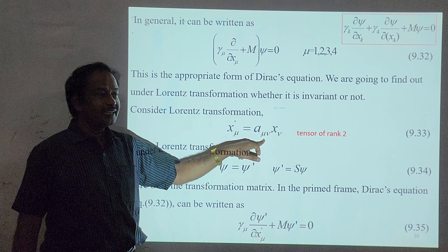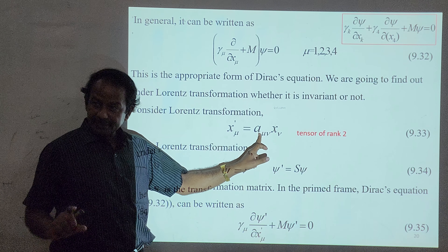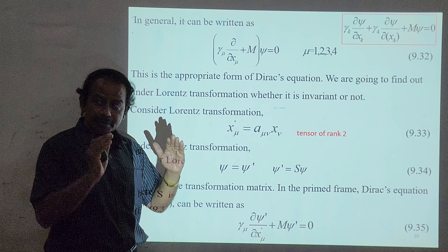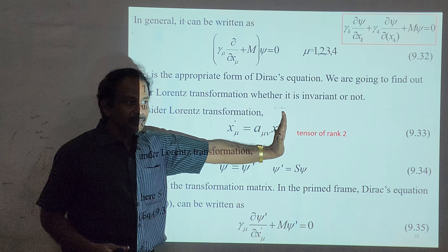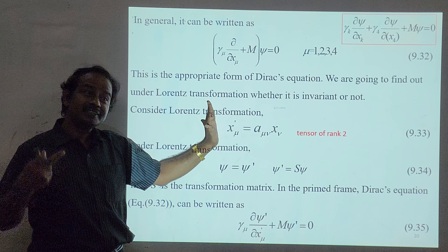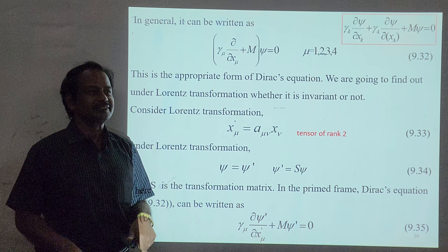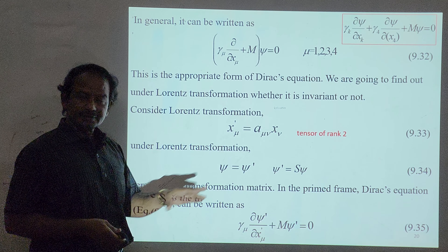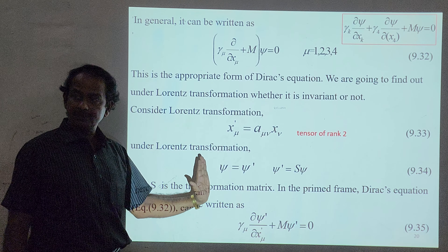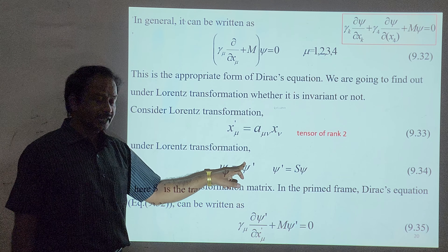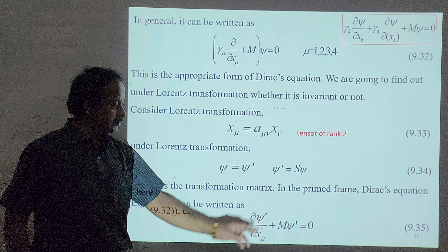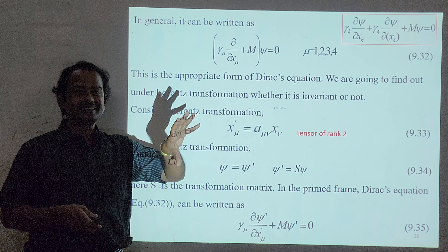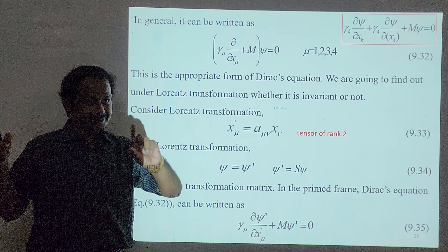Consider Lorentz transformation given by the matrix A_μν — this is a tensor of rank 2 with two indices μ and ν. As I said, a matrix multiplied by a column vector gives a new column vector — representing the coordinate transformation. Now, psi in one frame relates to psi-prime in the primed frame as: ψ' = S ψ, where S is the transformation matrix.